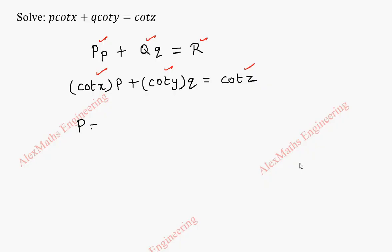So let's rewrite it clearly. P is cot x, Q is cot y and R is cot z. After getting this, we have to solve this equation to get the solution.